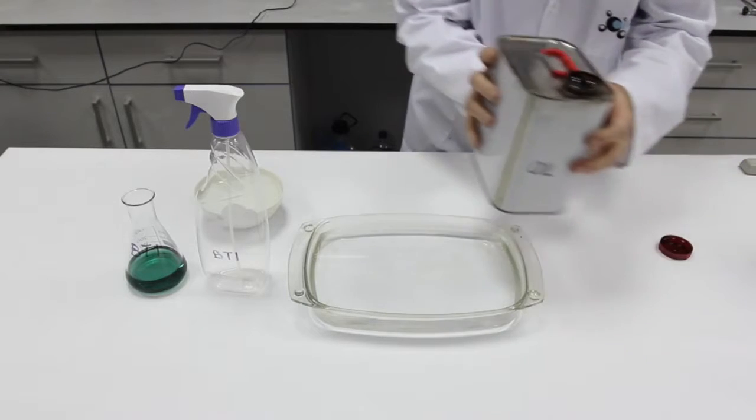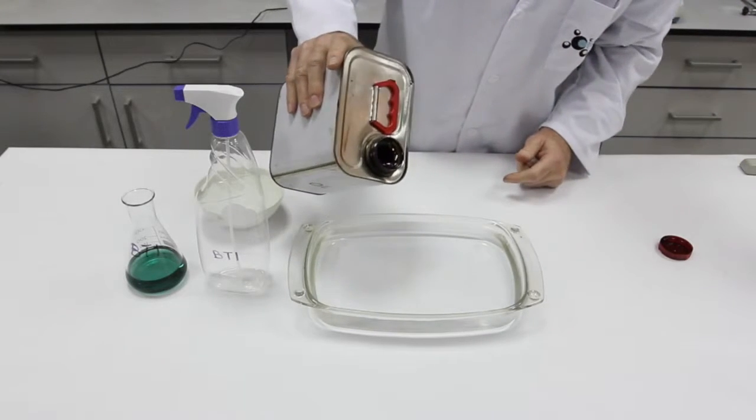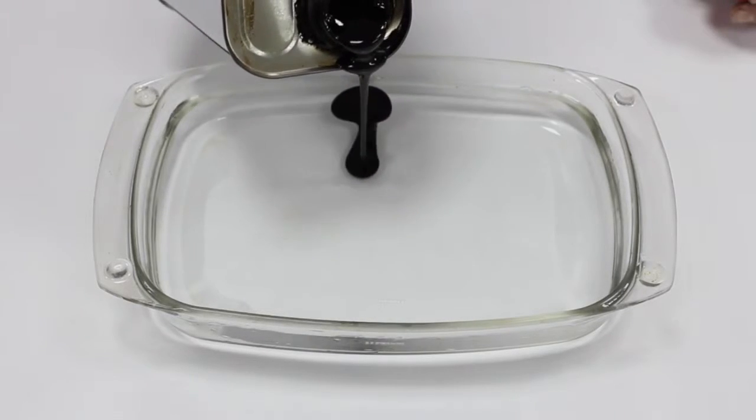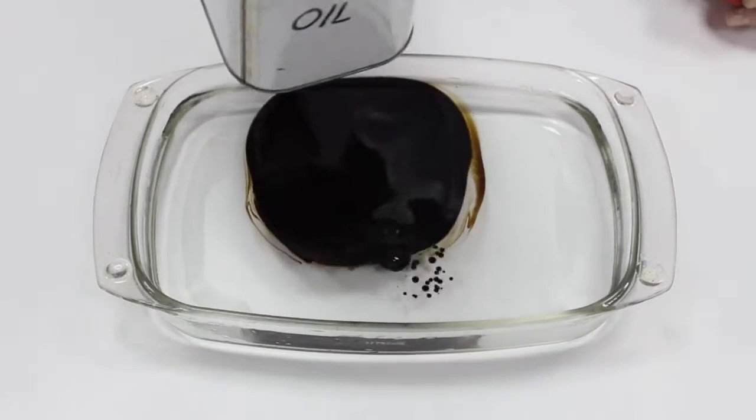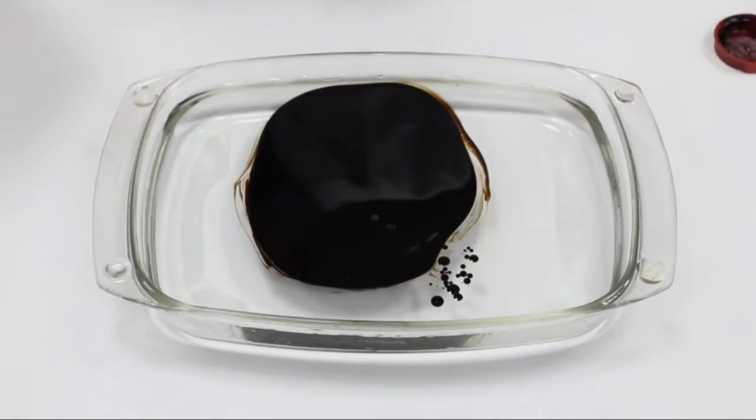The lab technician has filled a glass tray with water to simulate a marine ecosystem. Crude oil is then poured over the water's surface to generate a spot with an extension of 15 cm.